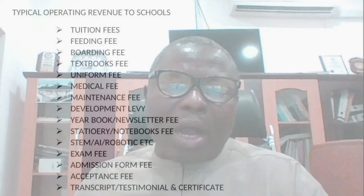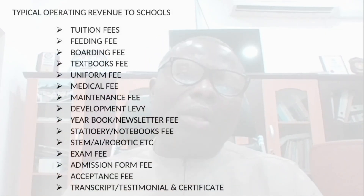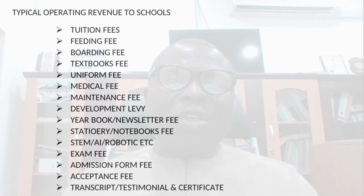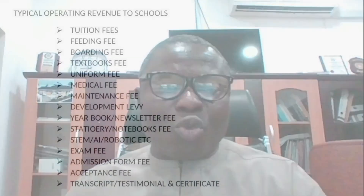Now let's look at the typical operating revenues. Number one is tuition fees. School fees have components, and we are going to dissect and analyze these components so that you know what makes up the fees you charge in the school. Number one is tuition fees.